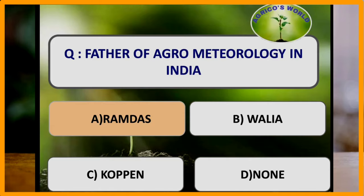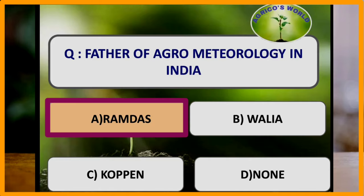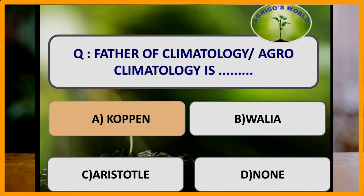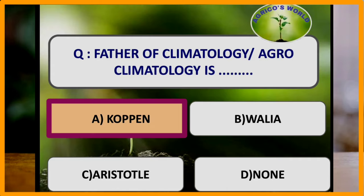Father of agrometeorology in India is Ramdas. Father of climatology or agrometeorology is Kopen.